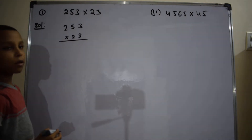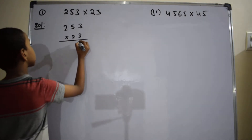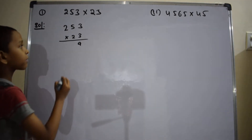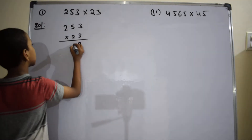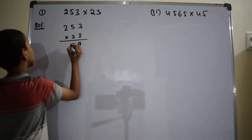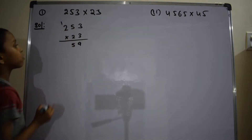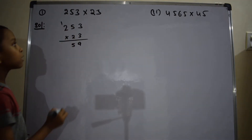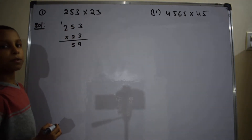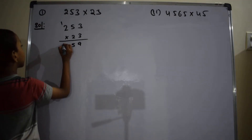3 into 3 equals 9. 3 into 5 equals 15. So right here 5, and 1 is carried to the 2. 3 into 2 equals 6. 6 plus 1 equals 7.